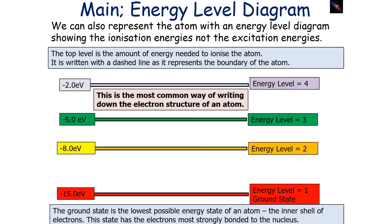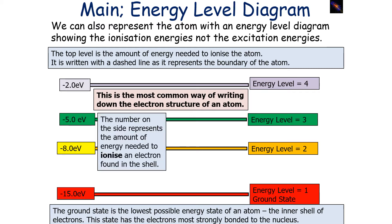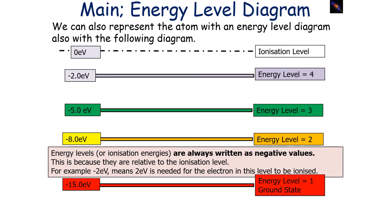The ground state is the lowest possible state of an atom — the inner shell of the electrons — and this state has the electrons most strongly bound to the nucleus. The number on the side now represents the amount of energy needed to ionise an electron found in that particular shell. For example, if you wish to ionise an electron found in energy level 2, you would need to give the electrons in this shell 8 eV or more. It's important to note that energy levels or ionisation energies are always written as negative values, because they're relative to the ionisation level. We set our ionisation level at 0 eV, so minus 2 eV in energy level 4 means that 2 eV is needed for the electron in that level to be ionised.